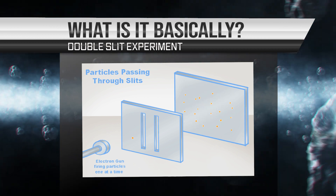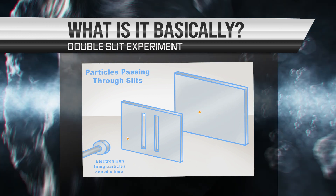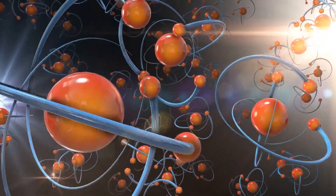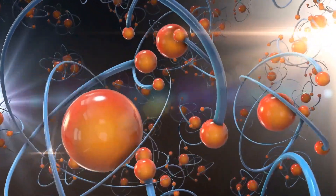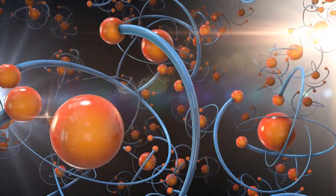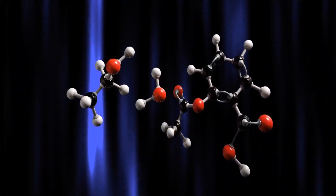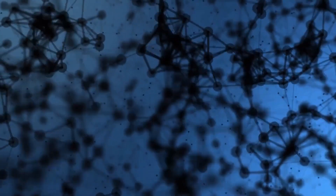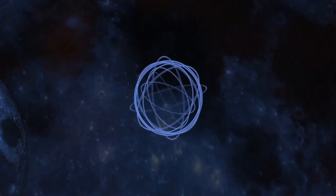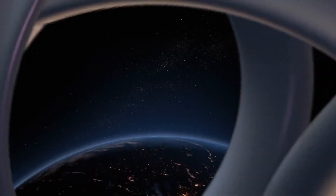This demonstrates that light can behave both like a wave and like a particle, depending on the experimental setup. The concept of superposition has important implications for our understanding of the universe. It suggests that quantum objects can exist in multiple states at the same time, and that our understanding of the world is necessarily incomplete.